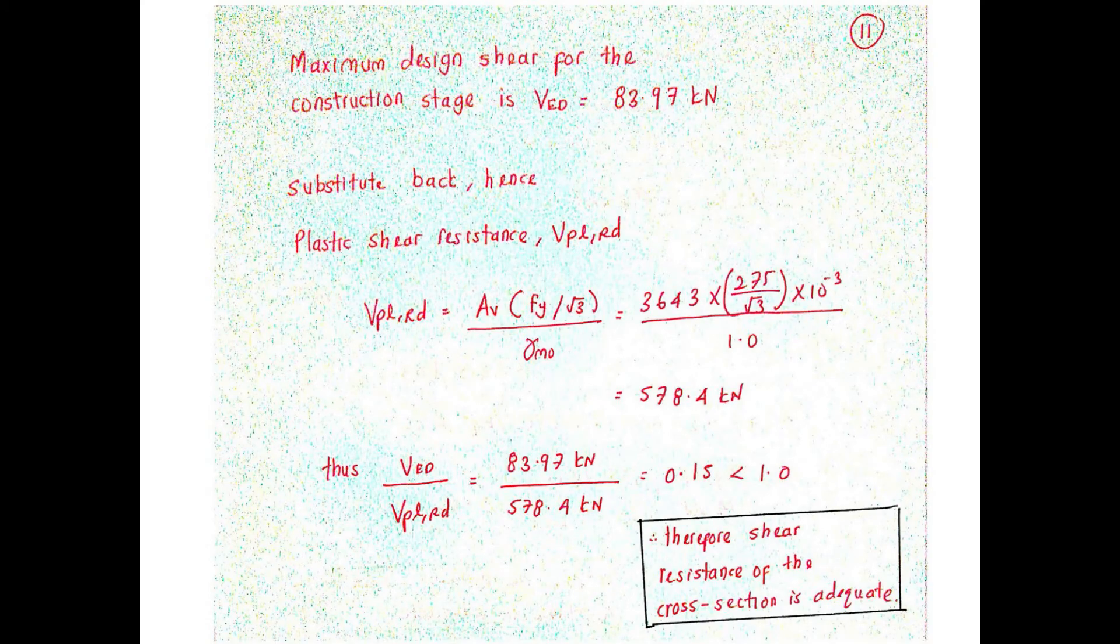Once the shear area has been calculated, we then need to substitute the value into the equation Vpl,Rd and finally give the results of 578.5 kN.